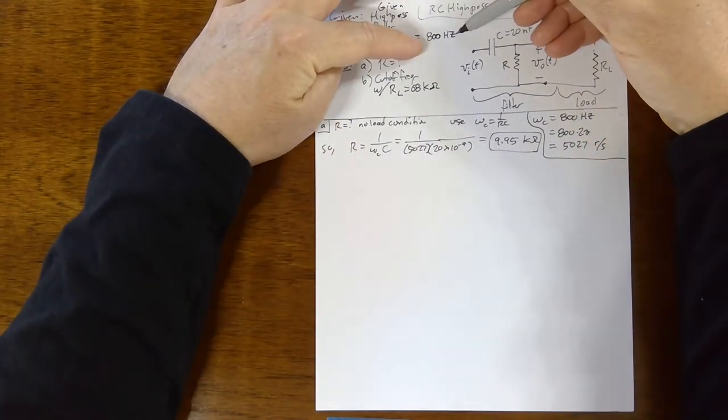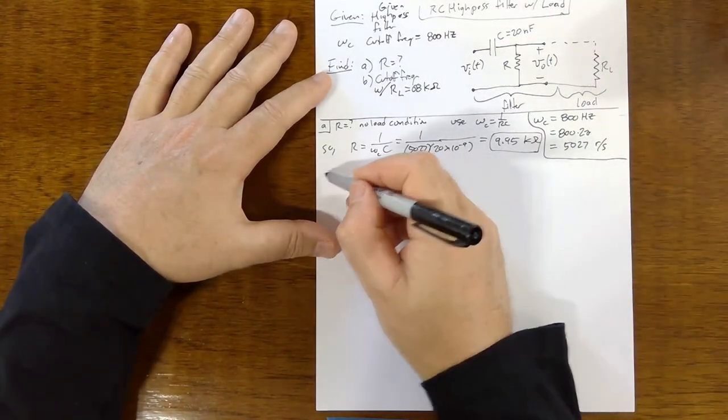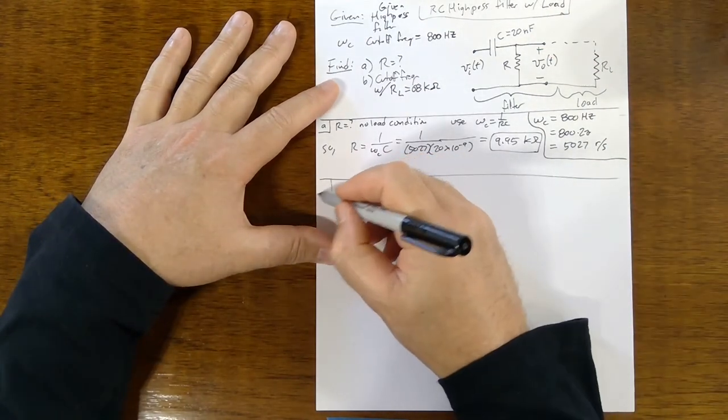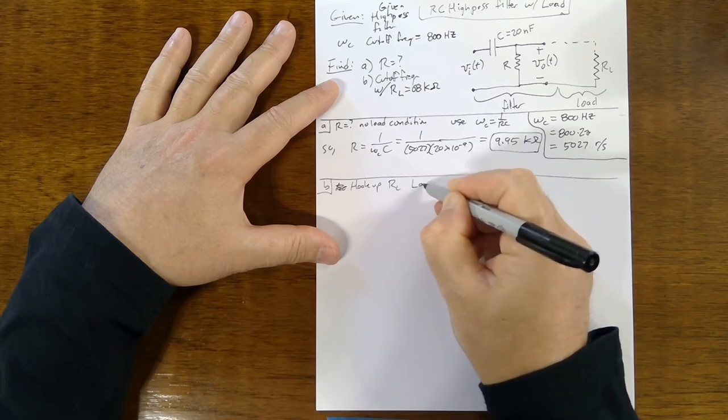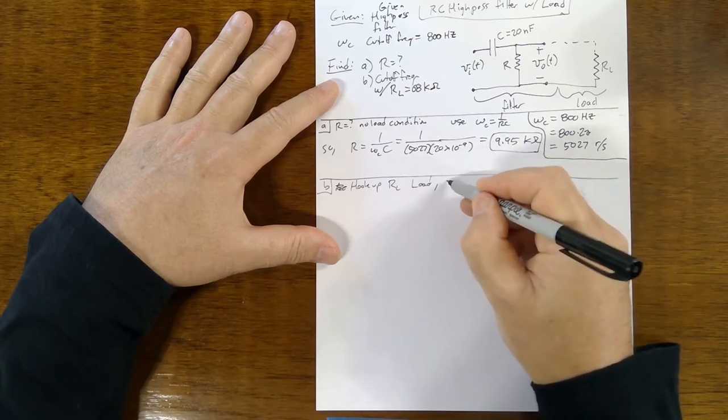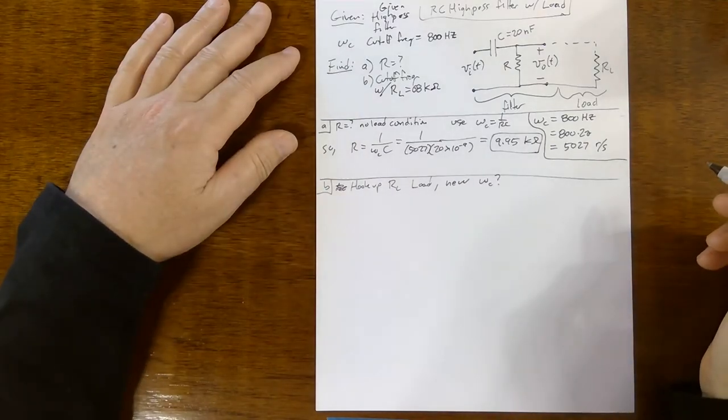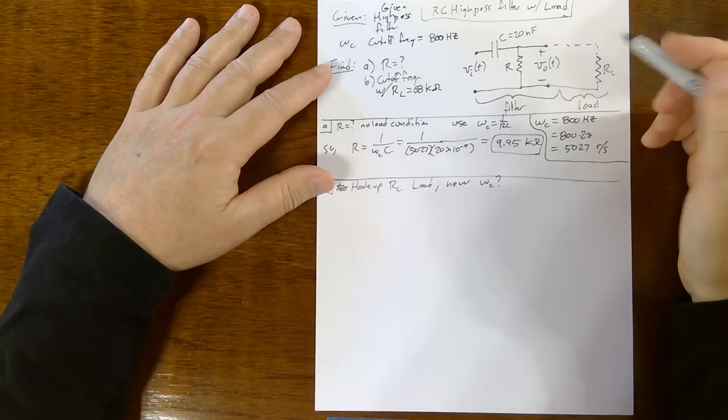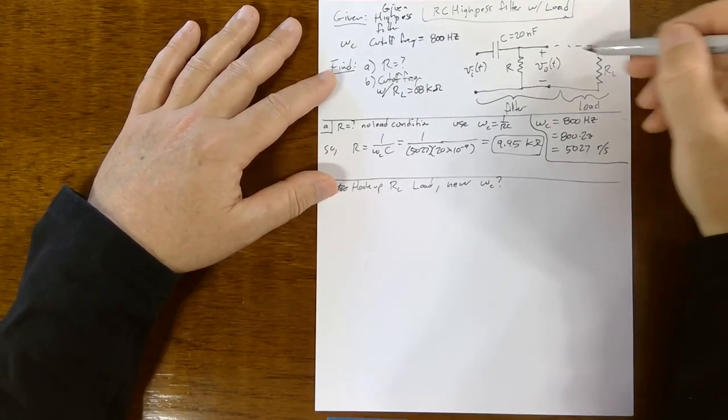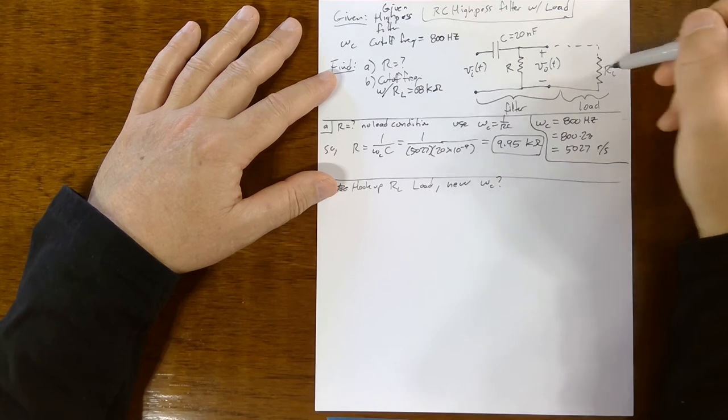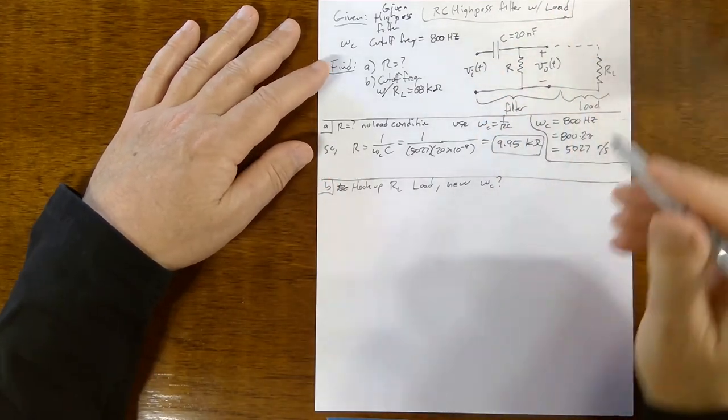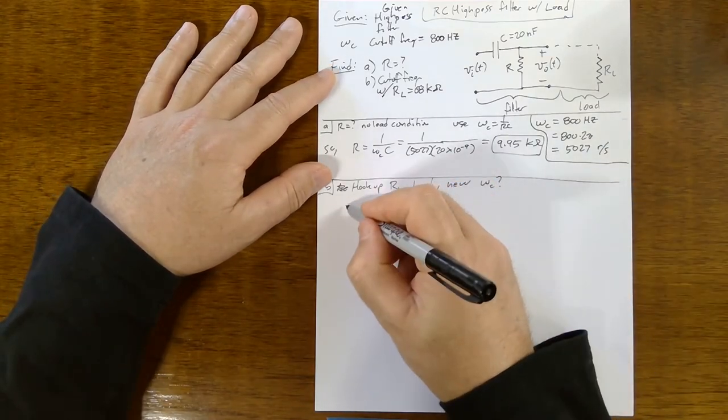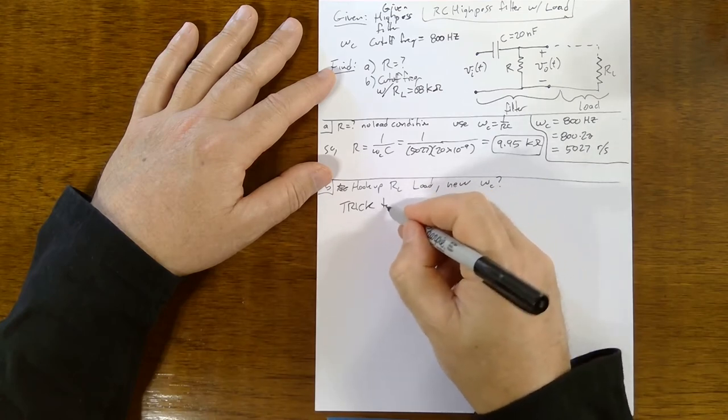For part B, we're going to add or I should say hook up the R sub L load, and then what is the new omega sub C. There's a trick here. If this were not a resistive load, you would have to model whatever element was in here. There could be inductors and capacitors and stuff, and you'd have to calculate a whole new transfer function. It would be pages and pages of ugly Laplace stuff. But we have a trick here.